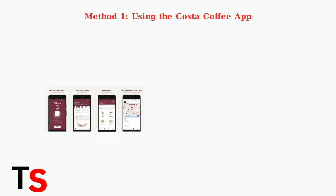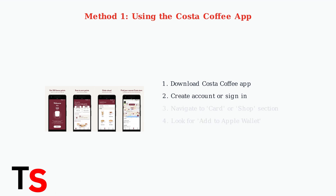The easiest method is through the Costa Coffee app. First, download the app from the App Store and create an account or sign in to your existing one. Once logged in, navigate to the Card or Shop section within the app. Look for the Add to Apple Wallet option, which is usually prominently displayed.